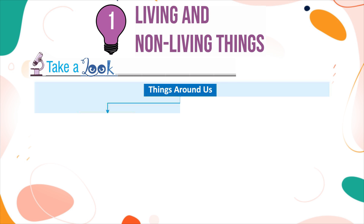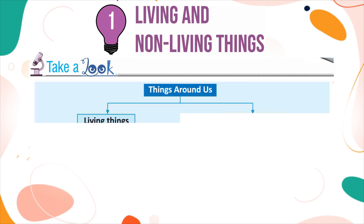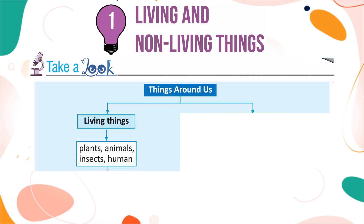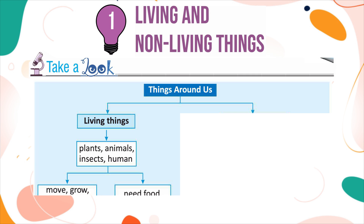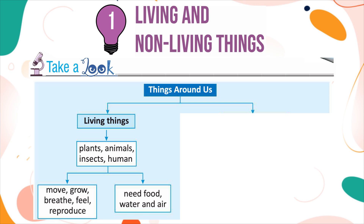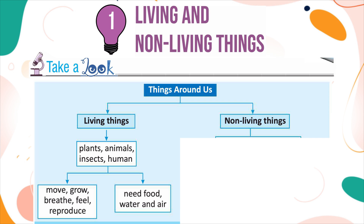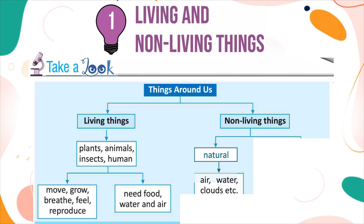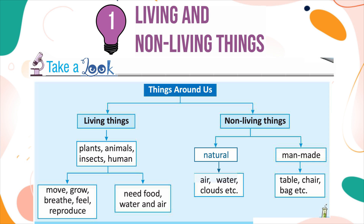Take a look — Things Around Us. Living things: plants, animals, insects, humans — they move, grow, breathe, feel, reproduce, and need food, water, and air. Non-living things: natural (air, water, clouds, etc.) and man-made (table, chair, bag, etc.).